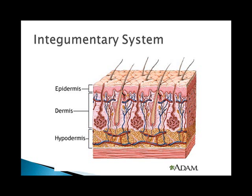The skin covers and protects the body from abrasion, bacterial attack, ultraviolet radiation, and dehydration. It helps control internal temperature and helps make vitamin D. It is also part of the sensory system, containing sensory receptors to help the brain detect environmental stimuli.